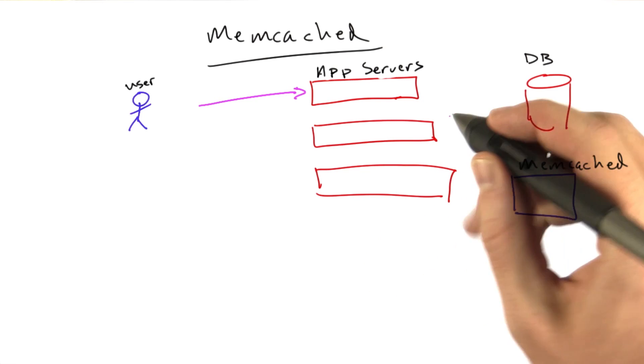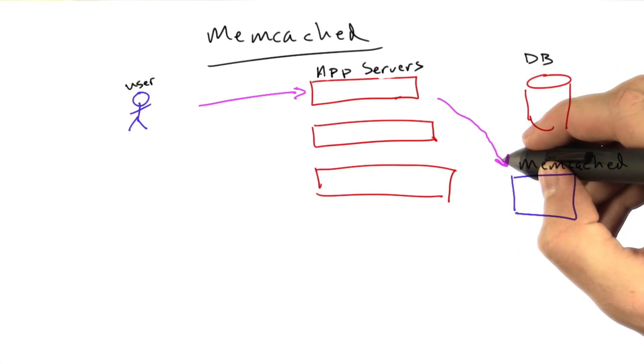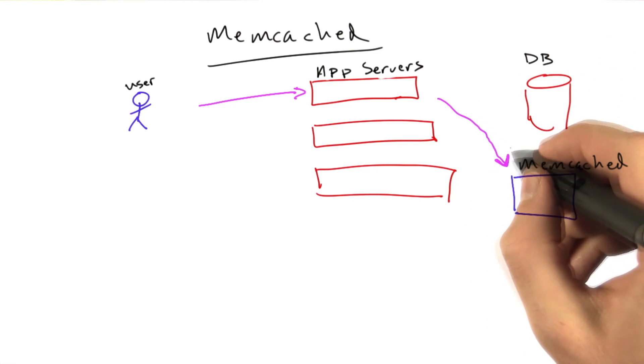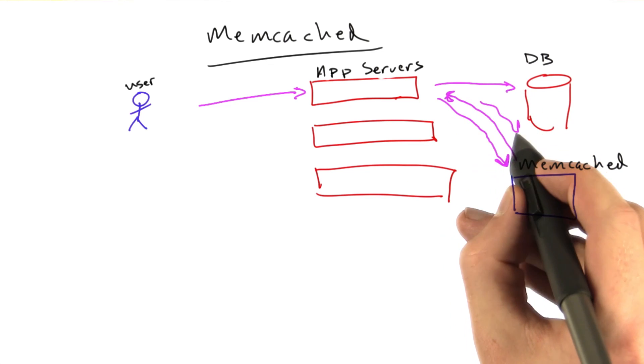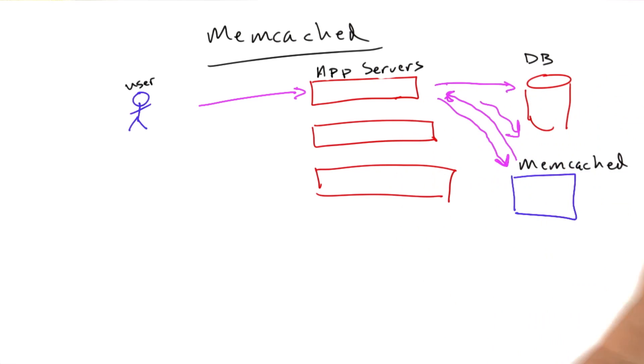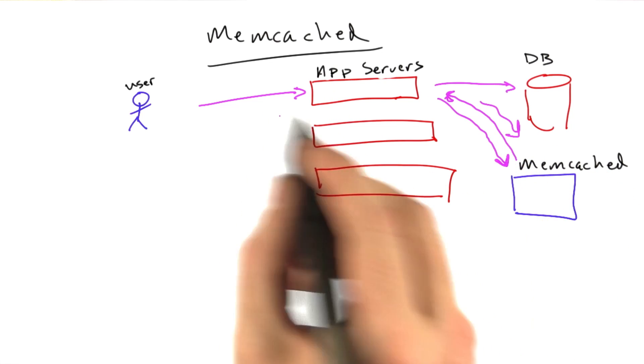The algorithm doesn't change. A request comes in, we check Memcached. If our response is there, we send it back to the user. If it isn't there, we check our database instead and write to Memcached. As we've been doing, the algorithm should be pretty familiar to you by now.